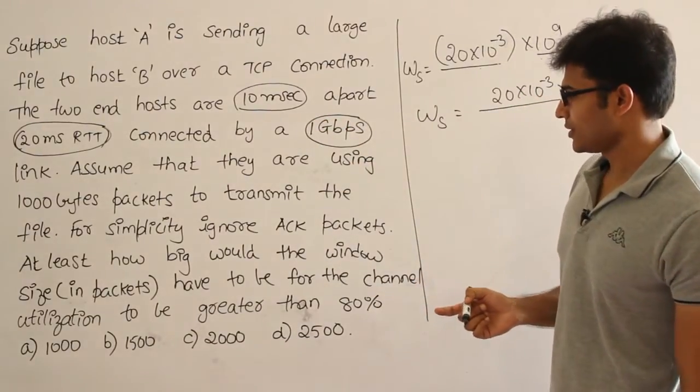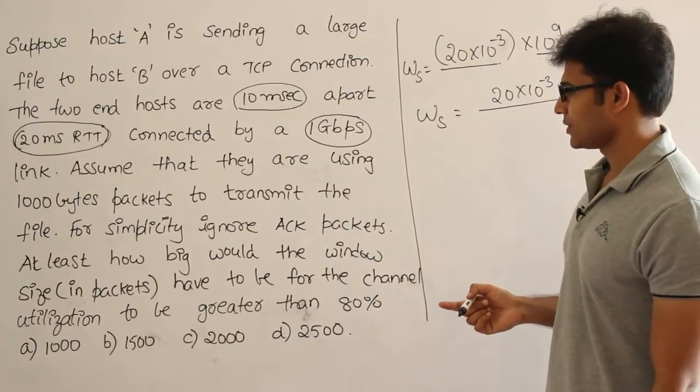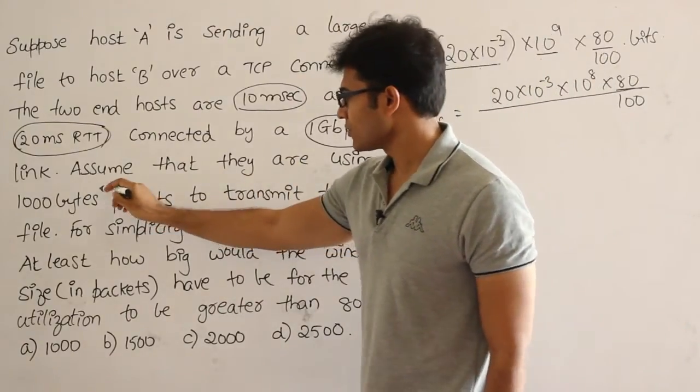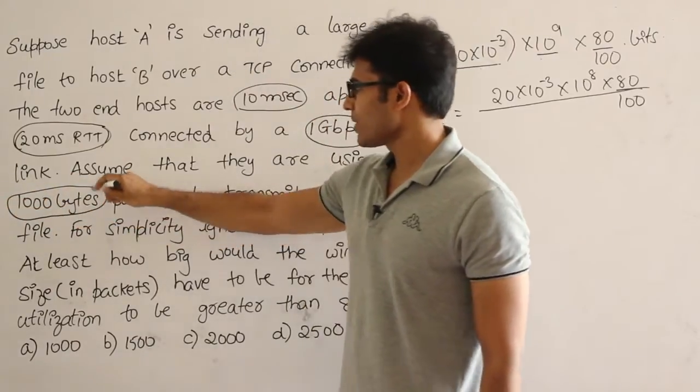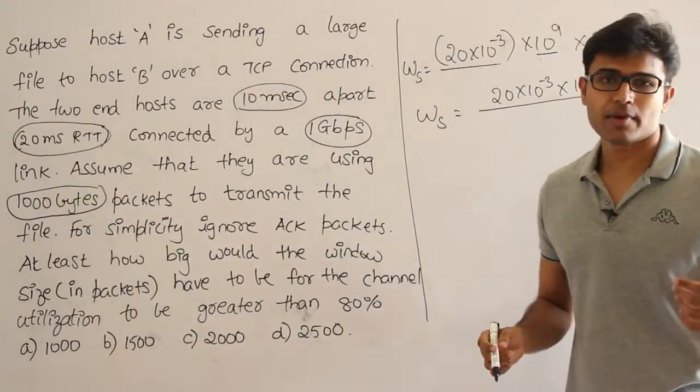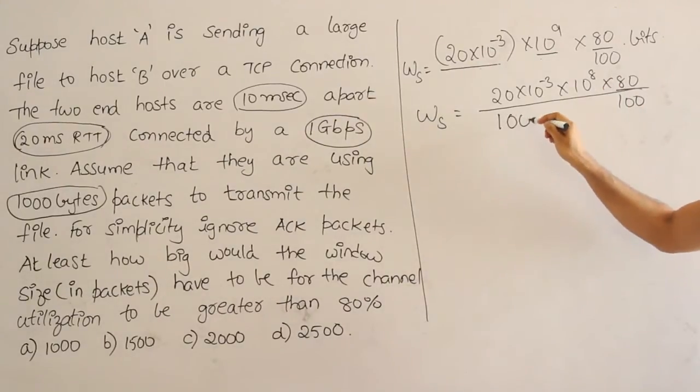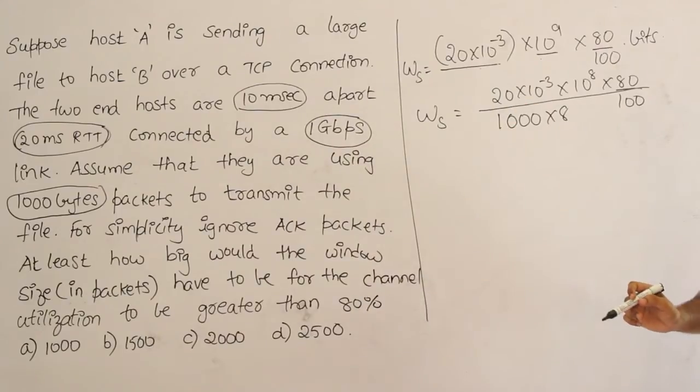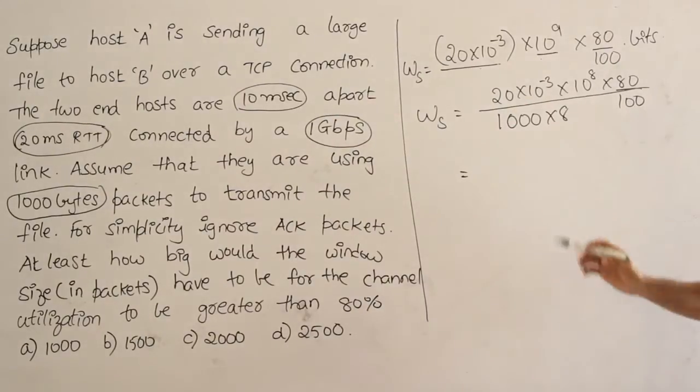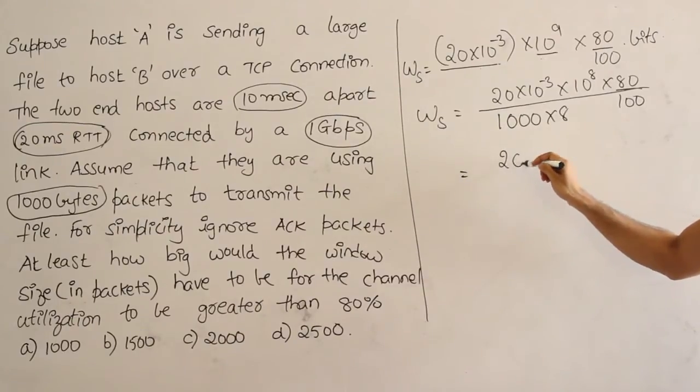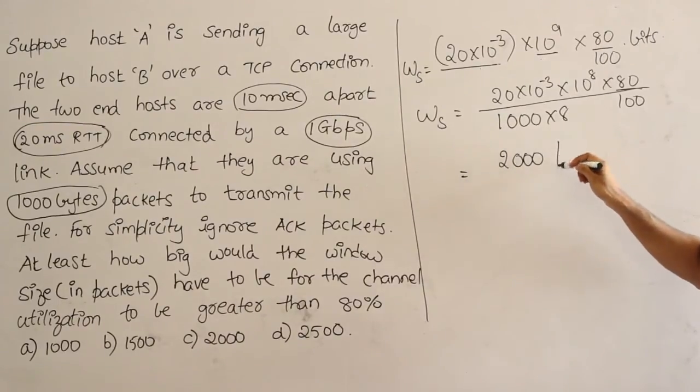They have mentioned it somewhere. Assume that they are using 1000 byte packets. Therefore size of the packet is 1000 bytes. Then how many packets do you want to send? 1000 bytes means 1000 into 8 bits. Therefore this is the window size in number of packets. If you calculate it I think you will get around 2000 packets.